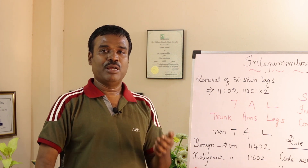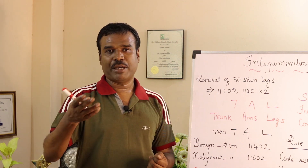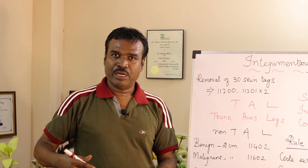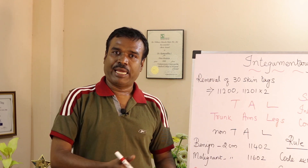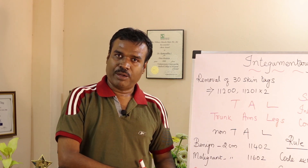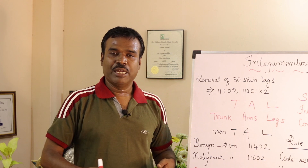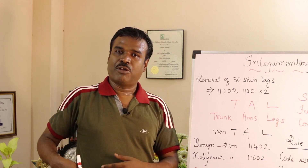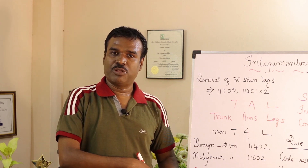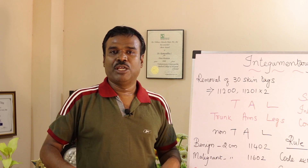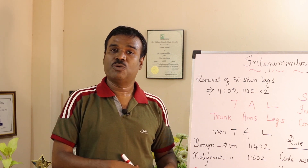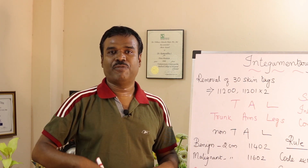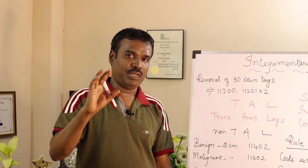For example, if the physician is doing a complex repair on the right side of the abdomen and again a complex repair on the left side of the abdomen, you can add the lengths together. If one repair is five centimeters and the other is two centimeters, you add them as five plus two centimeters and report one code for the complex repair.